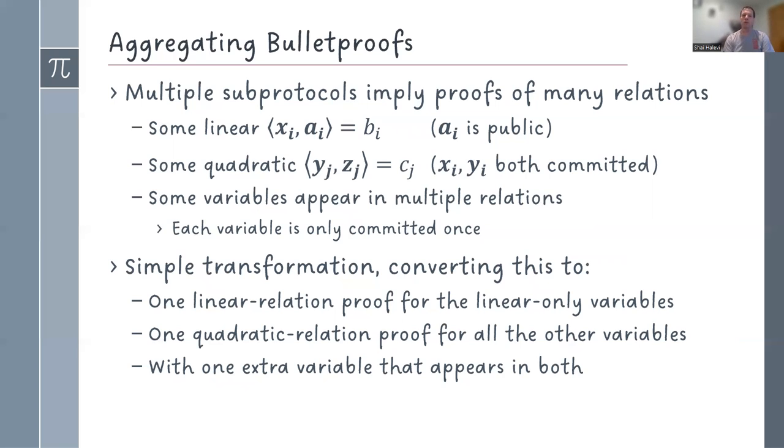The last thing that I want to tell you about is aggregating bulletproofs. We have a lot of sub-protocols. We need to prove a lot of properties. Each sub-protocol implies some linear relations, some quadratic relations. And we have some variables that are appearing in multiple of these relations, of course, but each variable is only committed once. So we show in this setting a series of simple transformations that converts this to just a single linear relation proof for all the variables that only appear in linear statements and a single quadratic relation proof for all the other variables. And you need to throw in one single additional variable that appears in both. So you can convert all of the myriad of many, many proofs into just two of them. And then you run the protocol just twice.